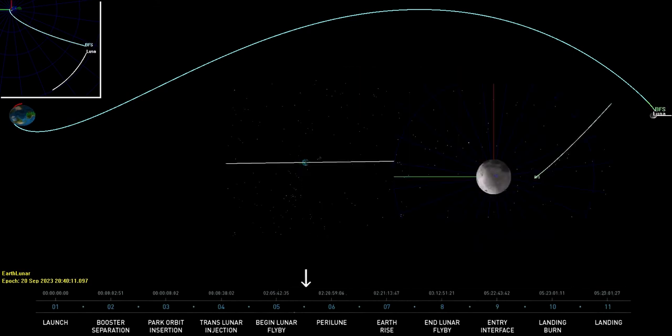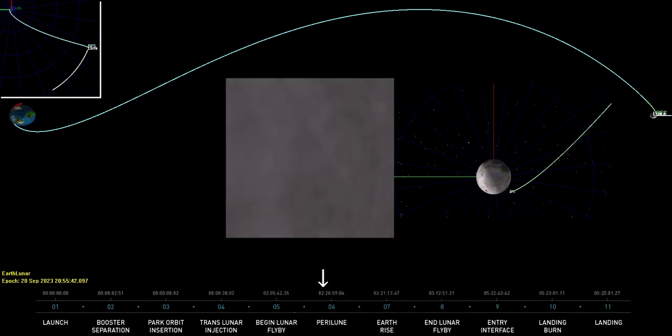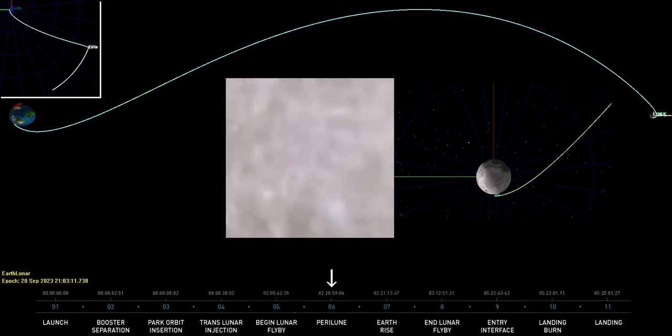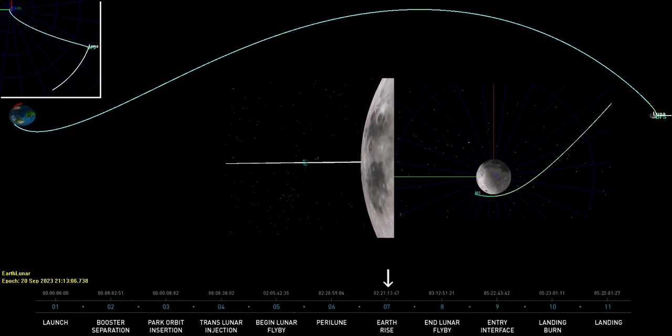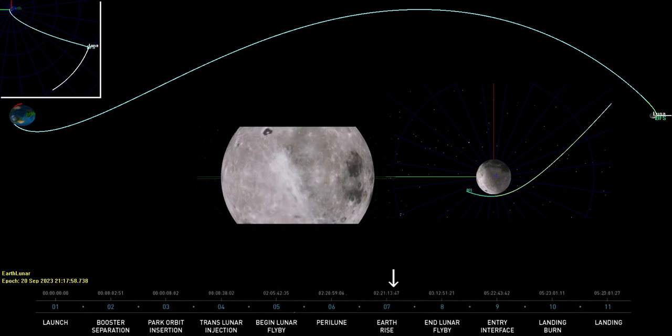Two days later, the vehicle sees the Earth set into the lunar darkness and temporarily loses contact with controllers on the ground. Ten minutes later, the sun breaks the horizon and the passengers get their first view of the lunar surface as the vehicle skims the moon at 200 kilometers and 2.5 kilometers per second.